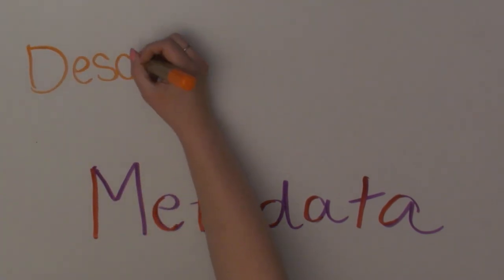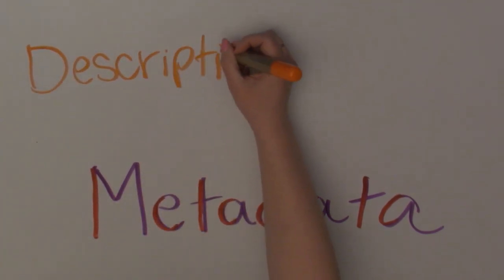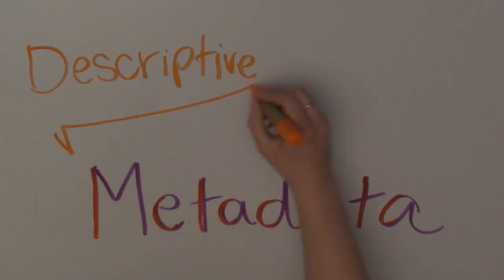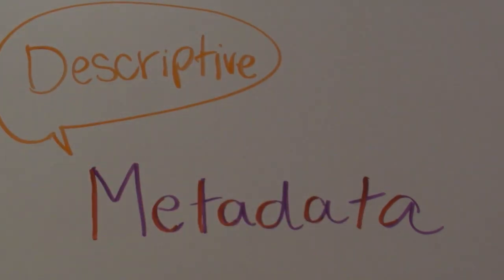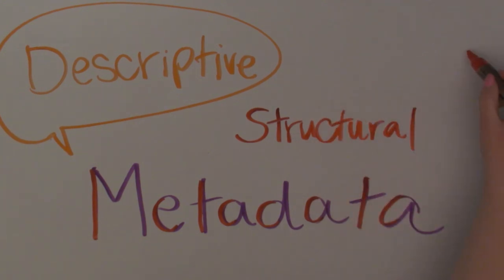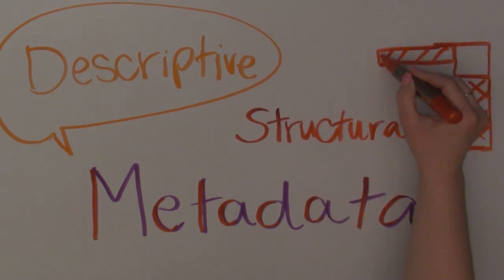Descriptive metadata relates to a piece of information and gives you extra detail about it, for example, a title of a picture, whereas structural metadata relates to many things and tells you how similar bits of information are stored and what they mean.